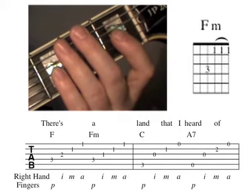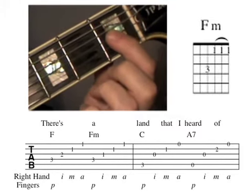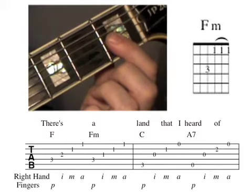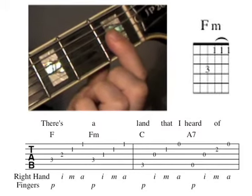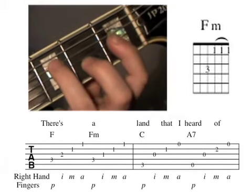The first finger holds down the third string first fret, the second string first fret, and the first string first fret. The third finger is placed on the fourth string third fret.